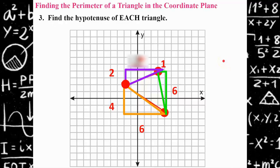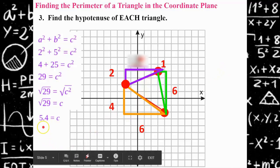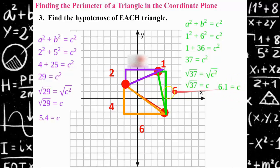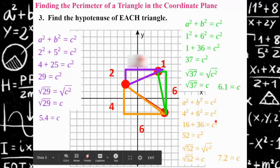So the hypotenuse of each, the purple triangle would have, once you do the math using the Pythagorean Theorem, you're going to get 5.4 units. The green hypotenuse is going to be 6.1 units. And the orange hypotenuse is going to be 7.2.